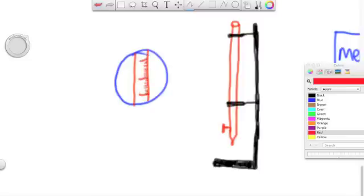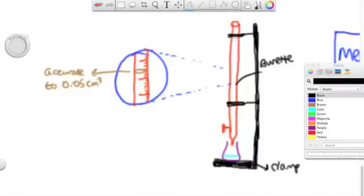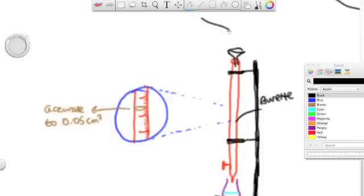A titration is a way of seeing how much acid can neutralise the volume of alkali, and that can tell you how much strength, or concentration, the alkali has. And this is called a burette, this red highlighted piece of glassware, and it's graduated with small lines, and you can actually read it to within 0.05 centimetres to say how much acid has been used.